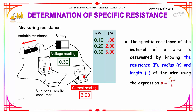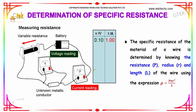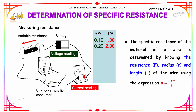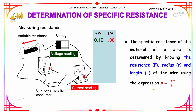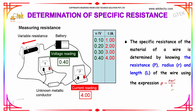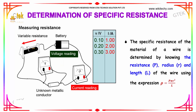Now let's talk about the determination of specific resistance. The specific resistance of the material of a wire is determined by knowing the resistance P, radius R, and length L of the wire, using the expression: rho is equal to P times pi R squared divided by L. This is how you calculate the specific resistance.